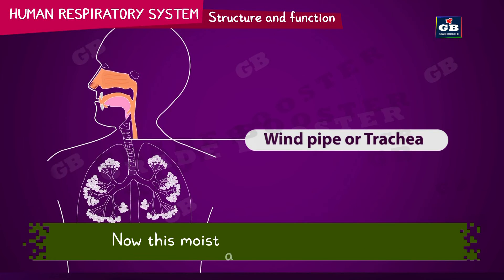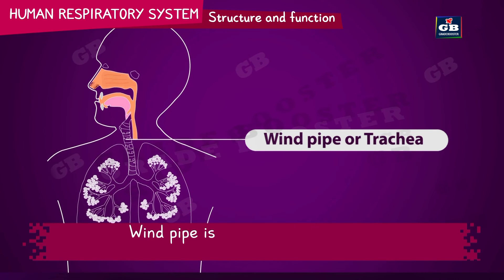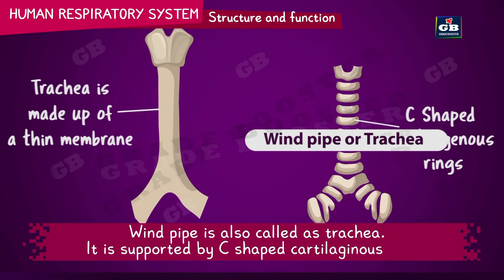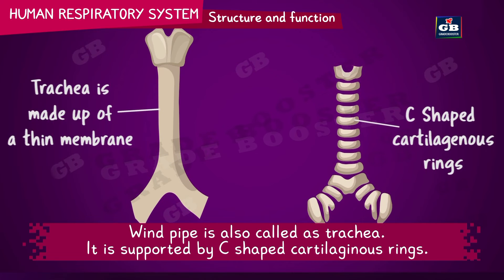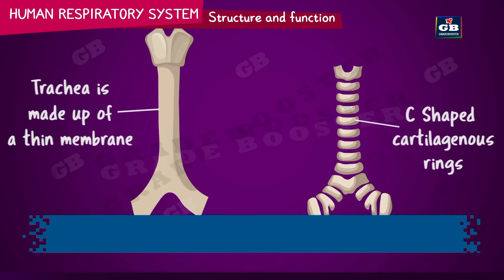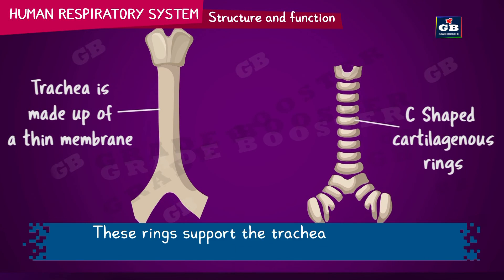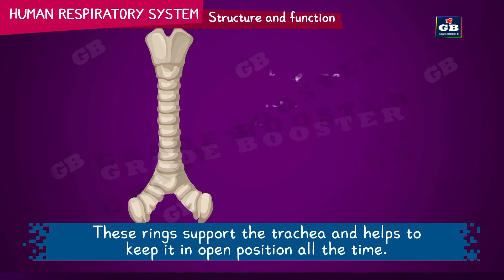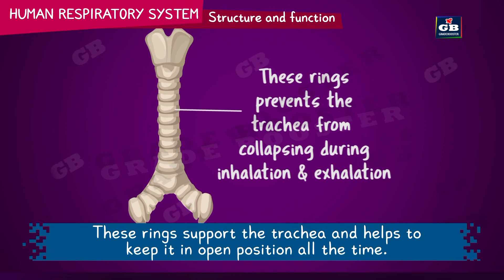This moist air enters the windpipe, also called the trachea. It is supported by C-shaped cartilaginous rings. These rings support the trachea and help to keep it in an open position at all times.